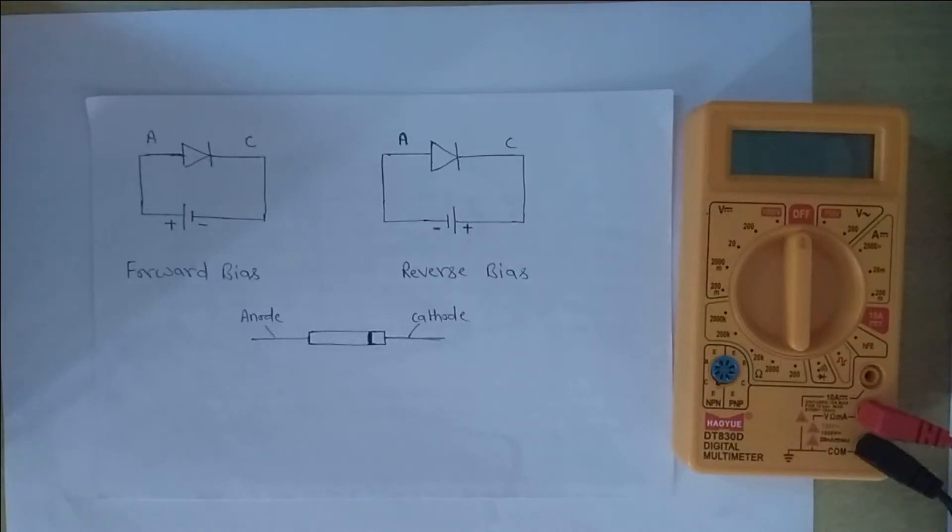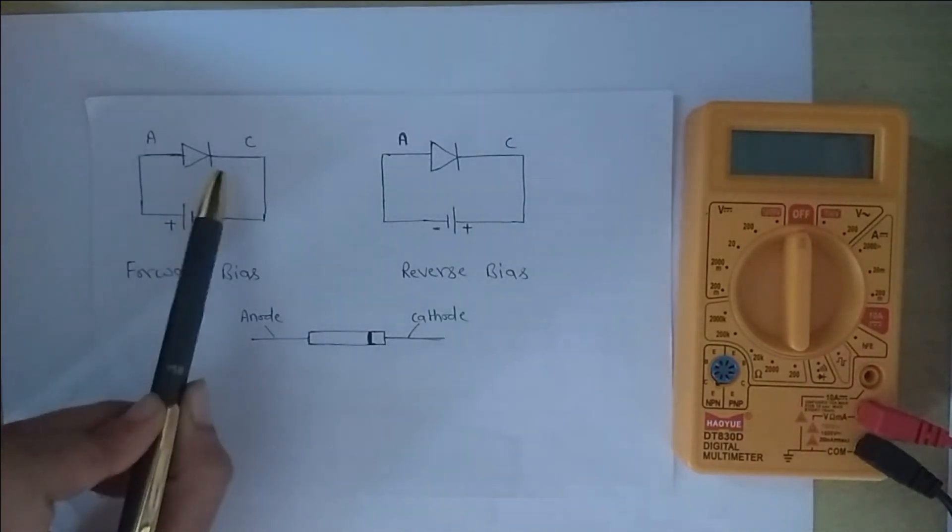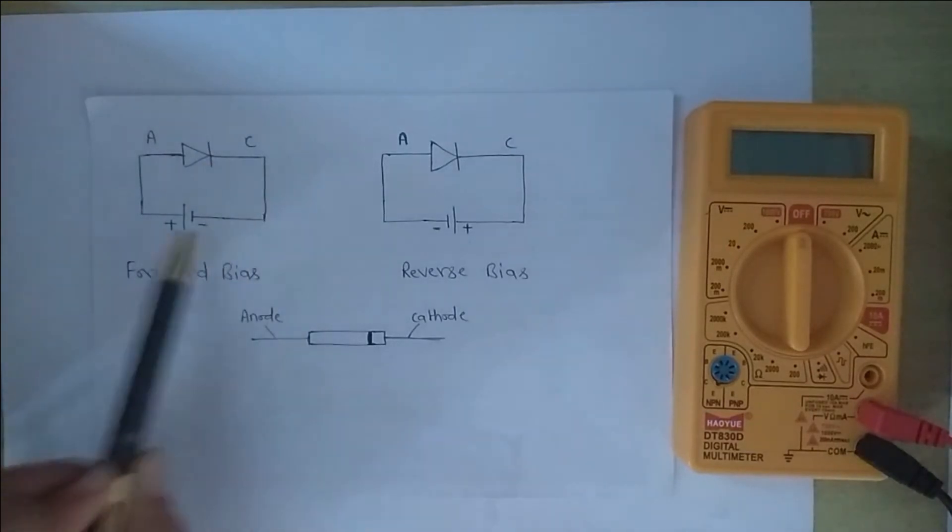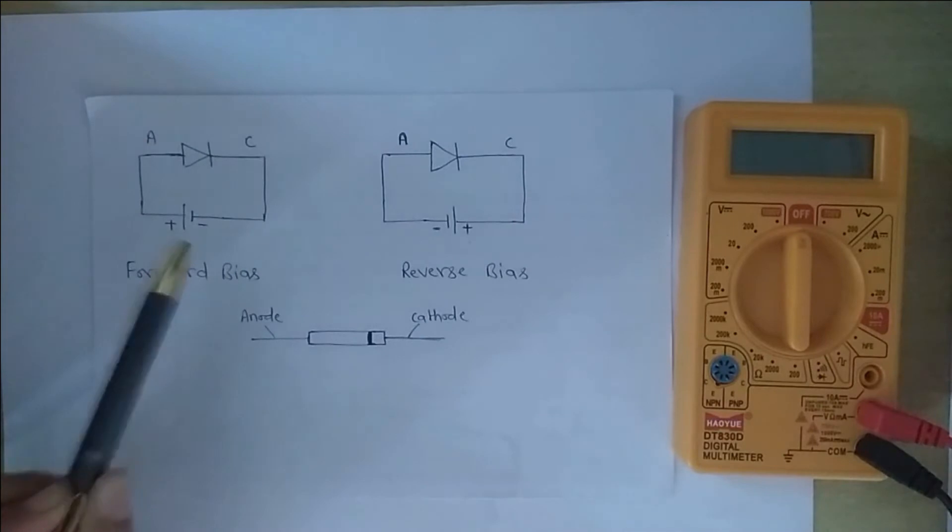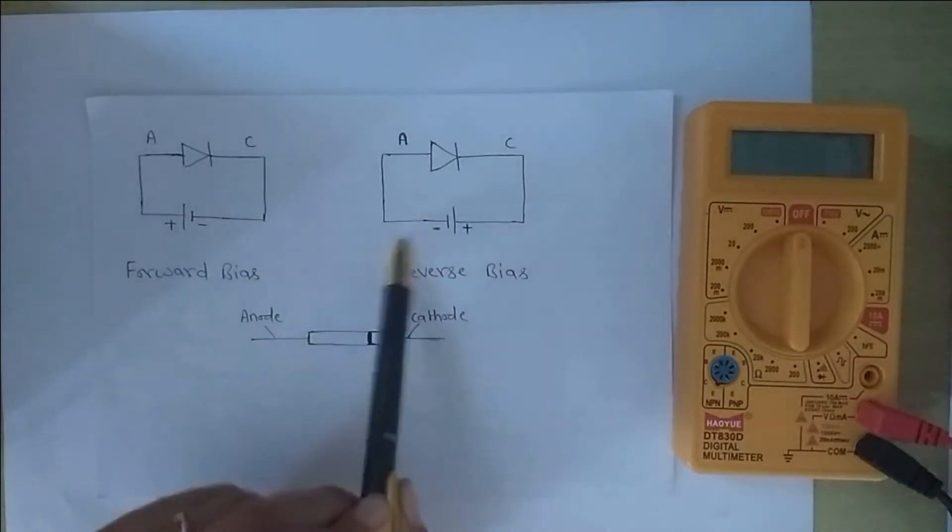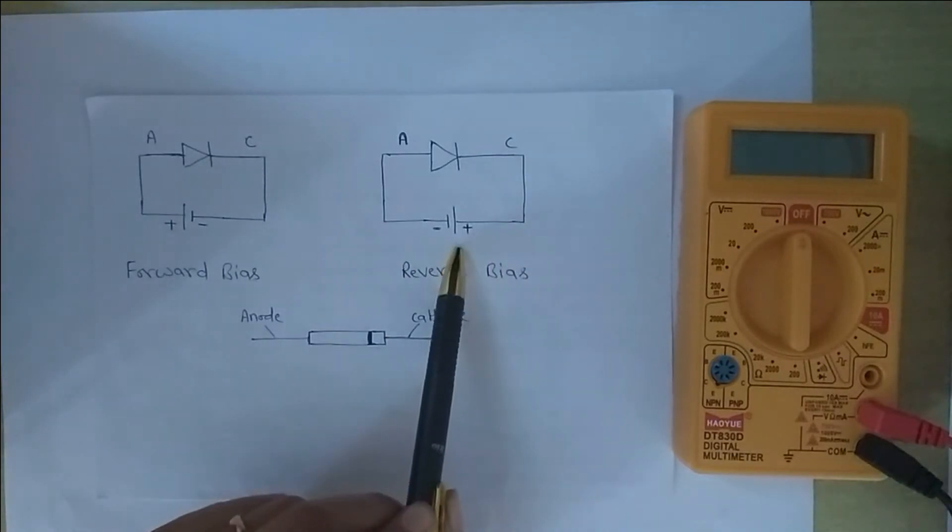We are going to learn how to test a diode using a multimeter. In a diode, when the anode terminal is connected to the positive terminal of a battery and the cathode is connected to the negative terminal, the diode is in forward bias condition. When the anode terminal is connected to the negative and the cathode is connected to the positive, the diode does not conduct and it is in reverse bias condition.